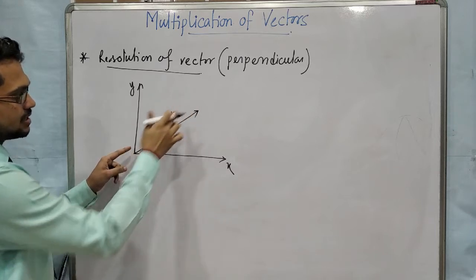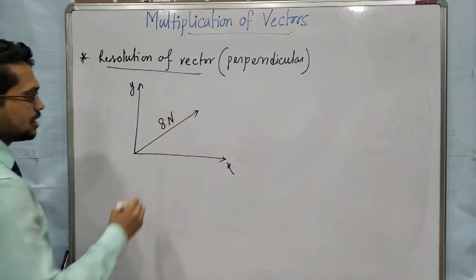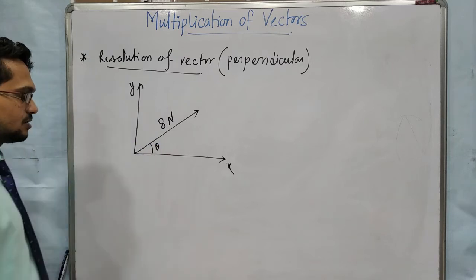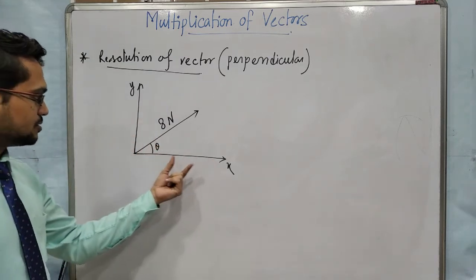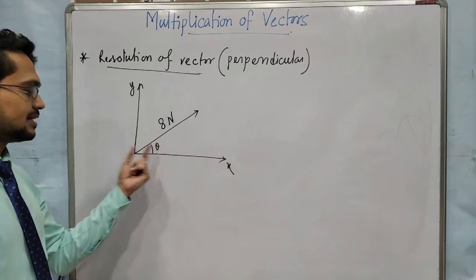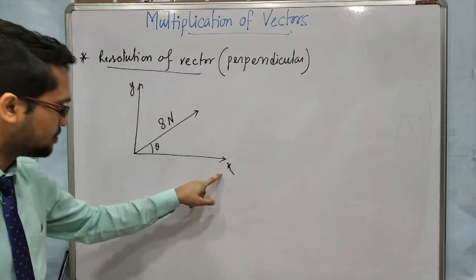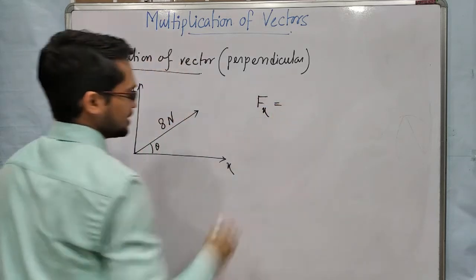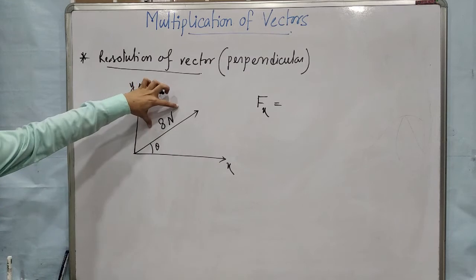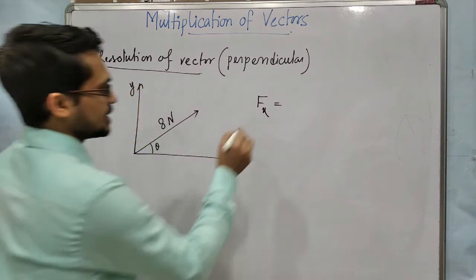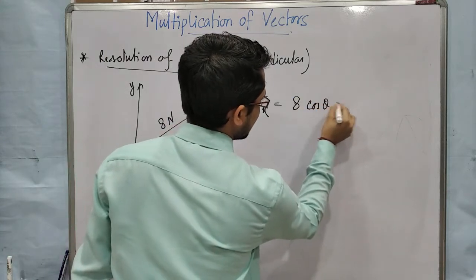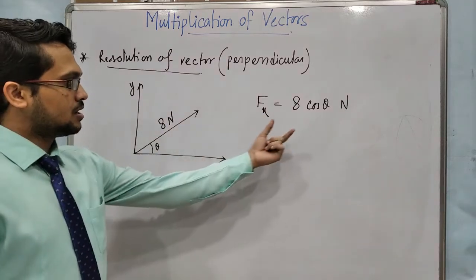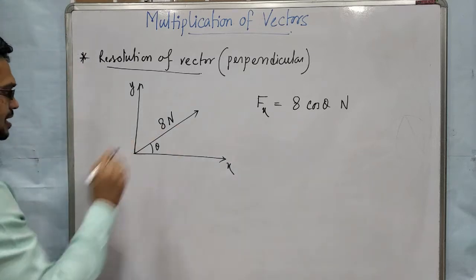This resultant will be in between two components. So, how to find the component? One angle will be given — suppose this angle with x axis is theta. The component with which the angle is given: the x component of the force will be that vector magnitude, 8 Newton, times cos theta. So 8 cos theta Newton will be the component along x axis. This is the component — only length, I have not put the vector part yet.